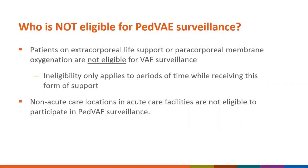Who is not eligible for PVAE surveillance? Patients on extracorporeal life support or extracorporeal membrane oxygenation are excluded — but only during periods when they are receiving that form of support. If those same patients are at some point on a conventional mode of mechanical ventilation, they would be eligible for PVAE surveillance during those times. Patients in non-acute care locations are also excluded.